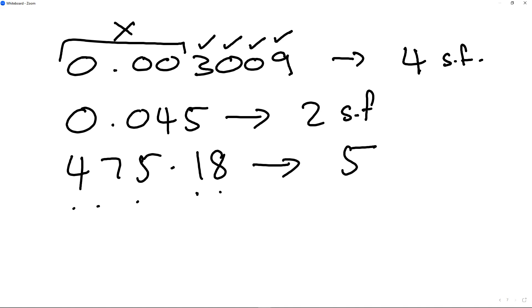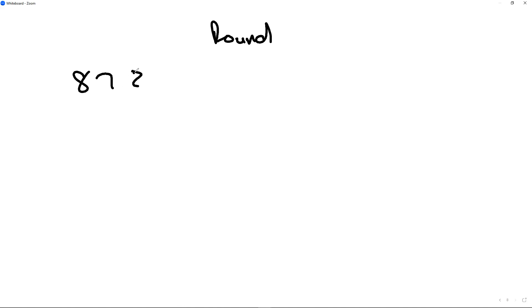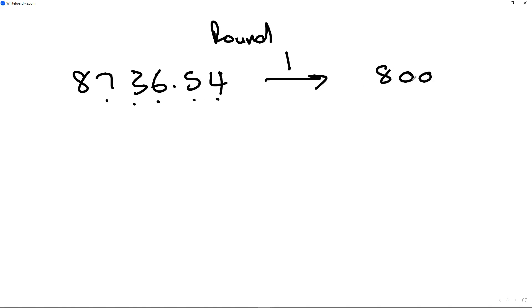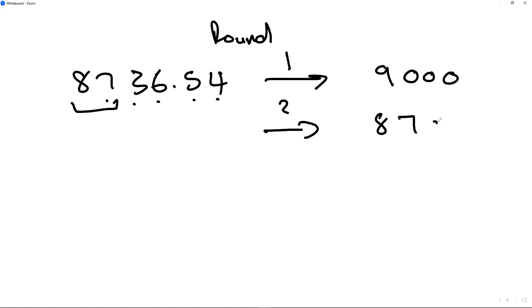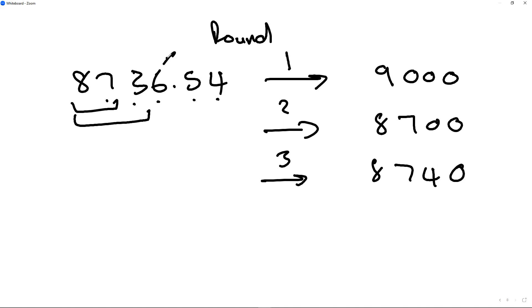Sometimes they ask you to round numbers to a certain number of significant figures. Let's say I want to round 8736.54 to one significant figure — I make all the other digits zero, giving 9000 because we round up. To two significant figures, I look at the first two digits: 8700. To three significant figures, it's 8740 because the six is greater than five.